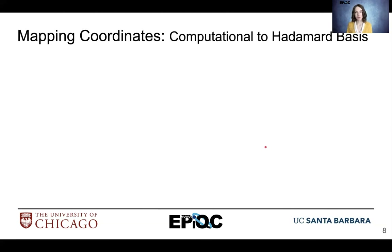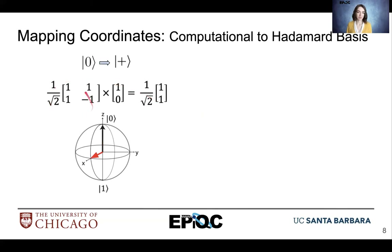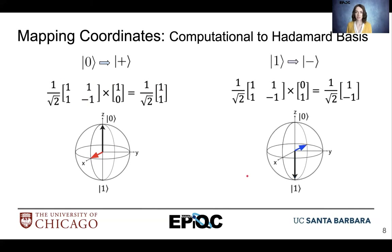Let's map some coordinates from the computational basis to the Hadamard basis. We have ket0 moving to ket plus using the Hadamard transform — we simply multiply the vector associated with ket0 by the Hadamard matrix. And ket1 moves to ket minus with another vector-matrix multiplication, this time using the vector representation for ket1.